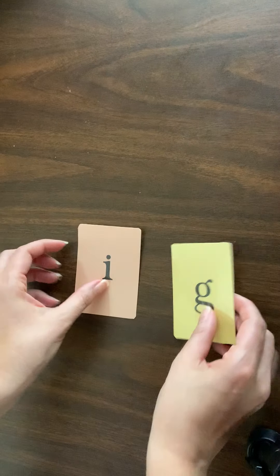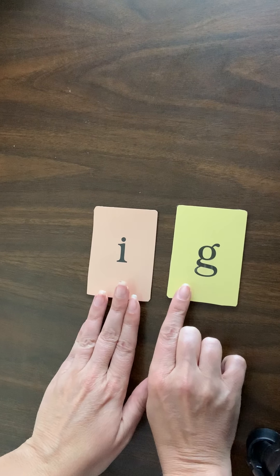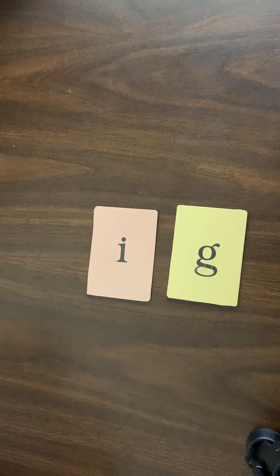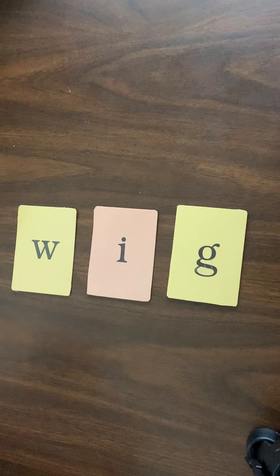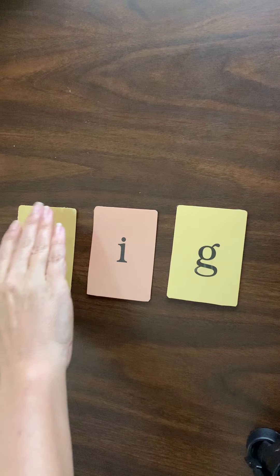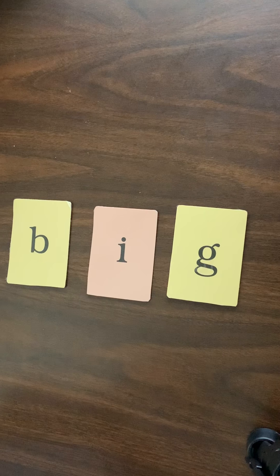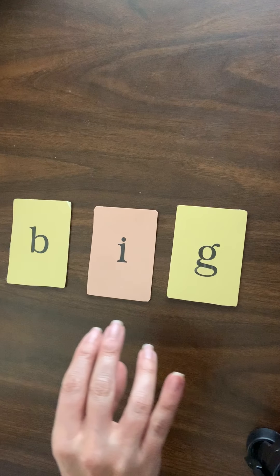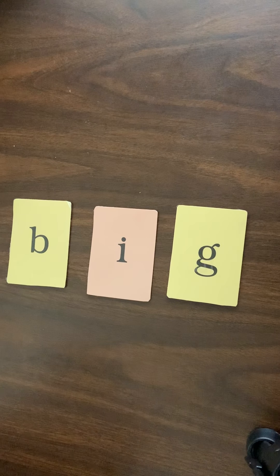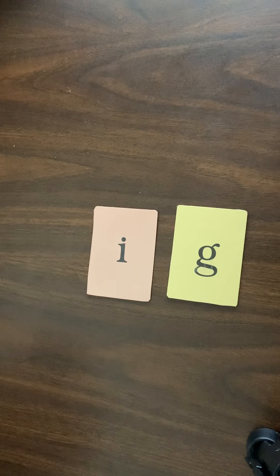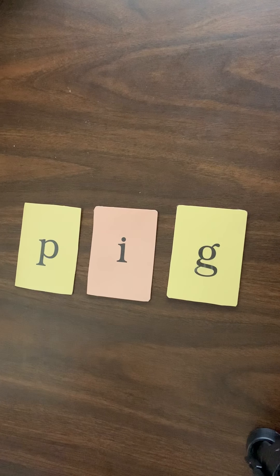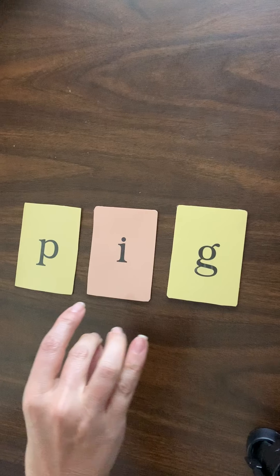We're now going to move on to a different word family. Our new word family is 'ig.' If my first word is wig, what does this say? Big. If you said big, b-i-g, big, you are correct. If this says big, what word is this? If you said pig, you are correct. P-i-g, pig.